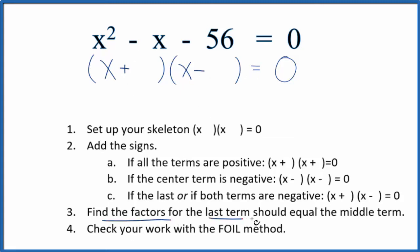Now we can find the factors for the last term and that should add up to the middle term. So we have 56 here, minus 56, and we have a minus 1x here. So the factors for 56, we could have 56 times 1, 28 times 2, 14 times 4, or we could have 8 times 7.